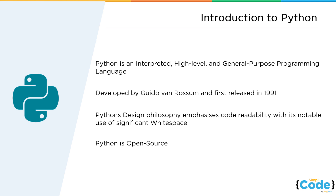The difference between a high-level programming language and a low-level programming language is that low-level languages are essentially machine language instructions — the actual instructions that a computer can understand. A high-level language like Python is something that we humans understand better and can write in more easily.